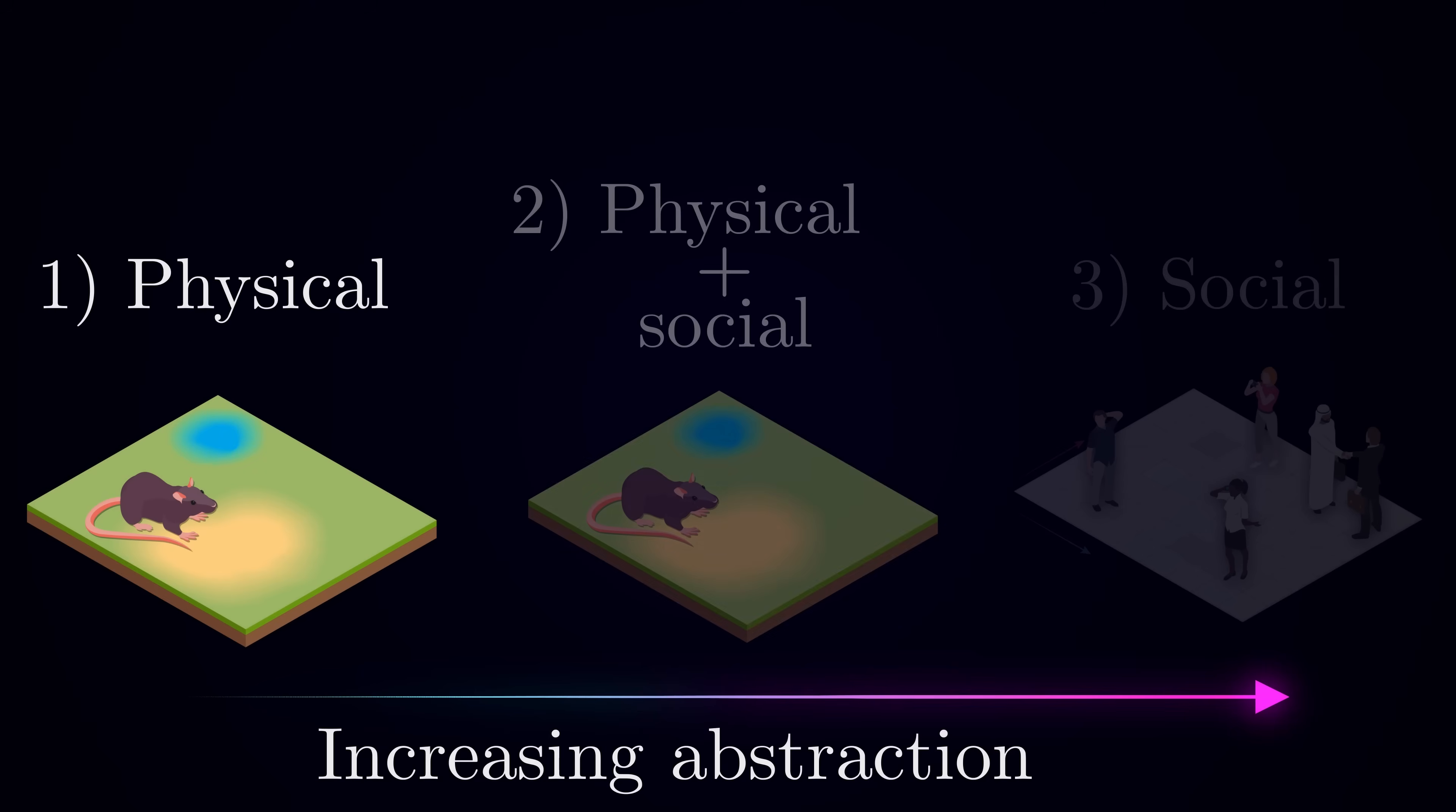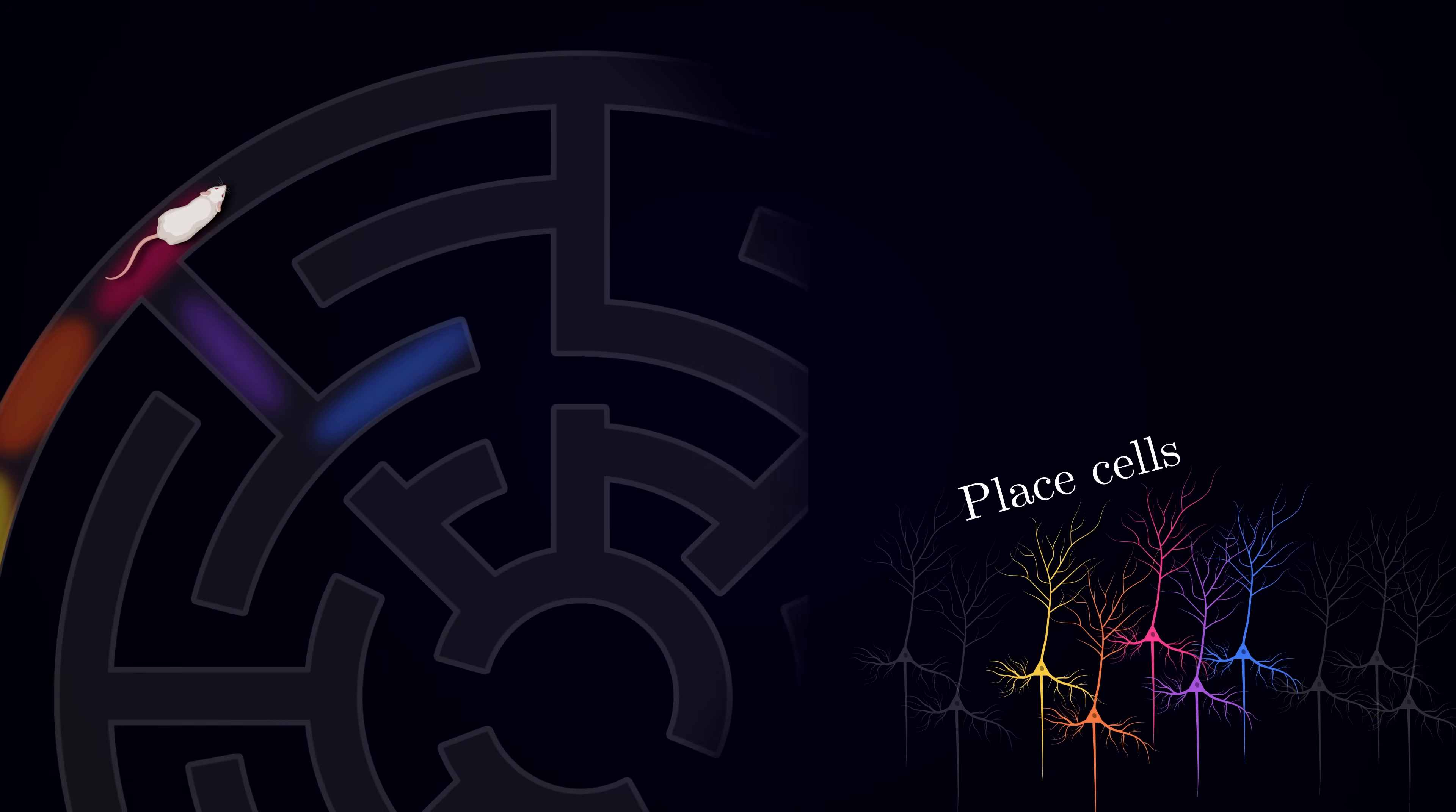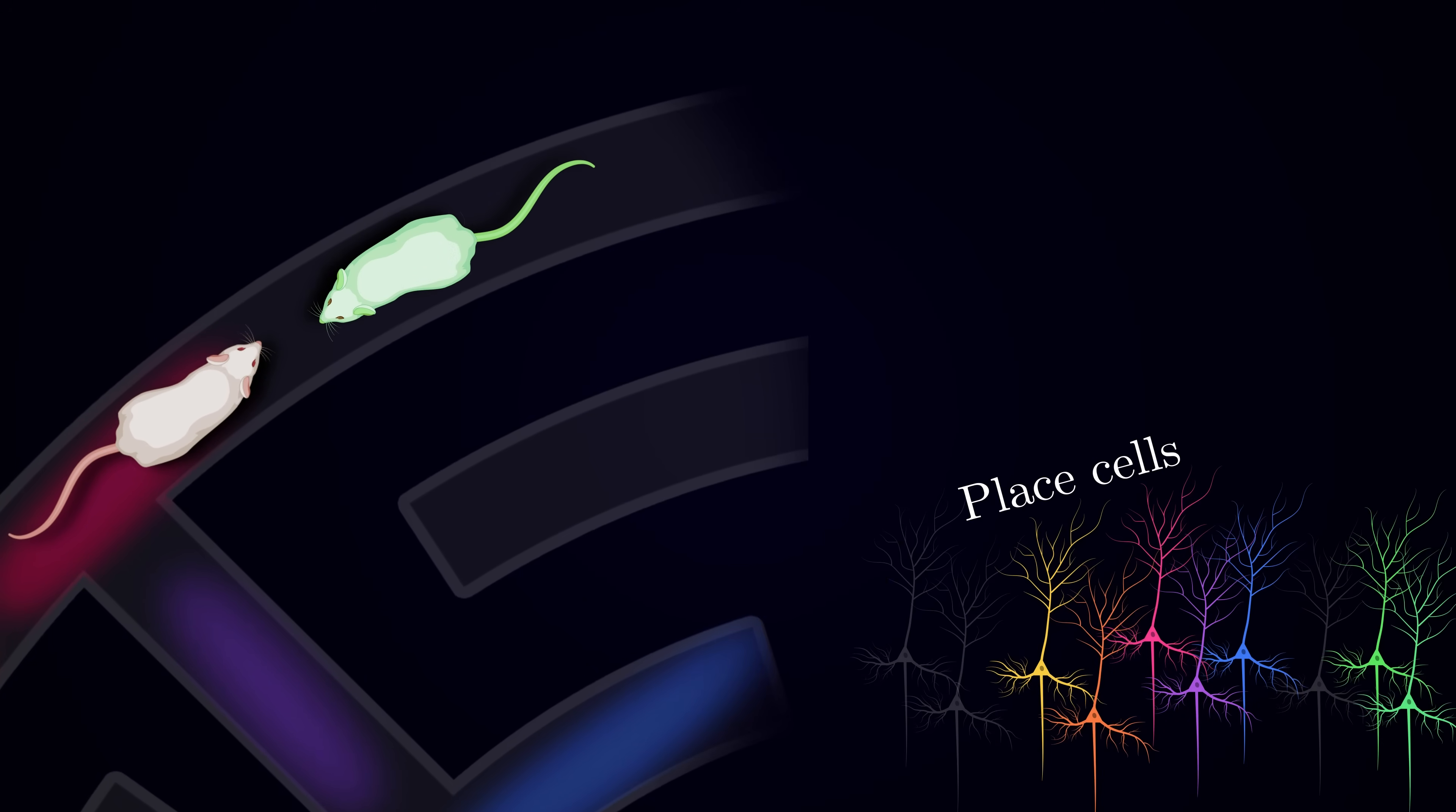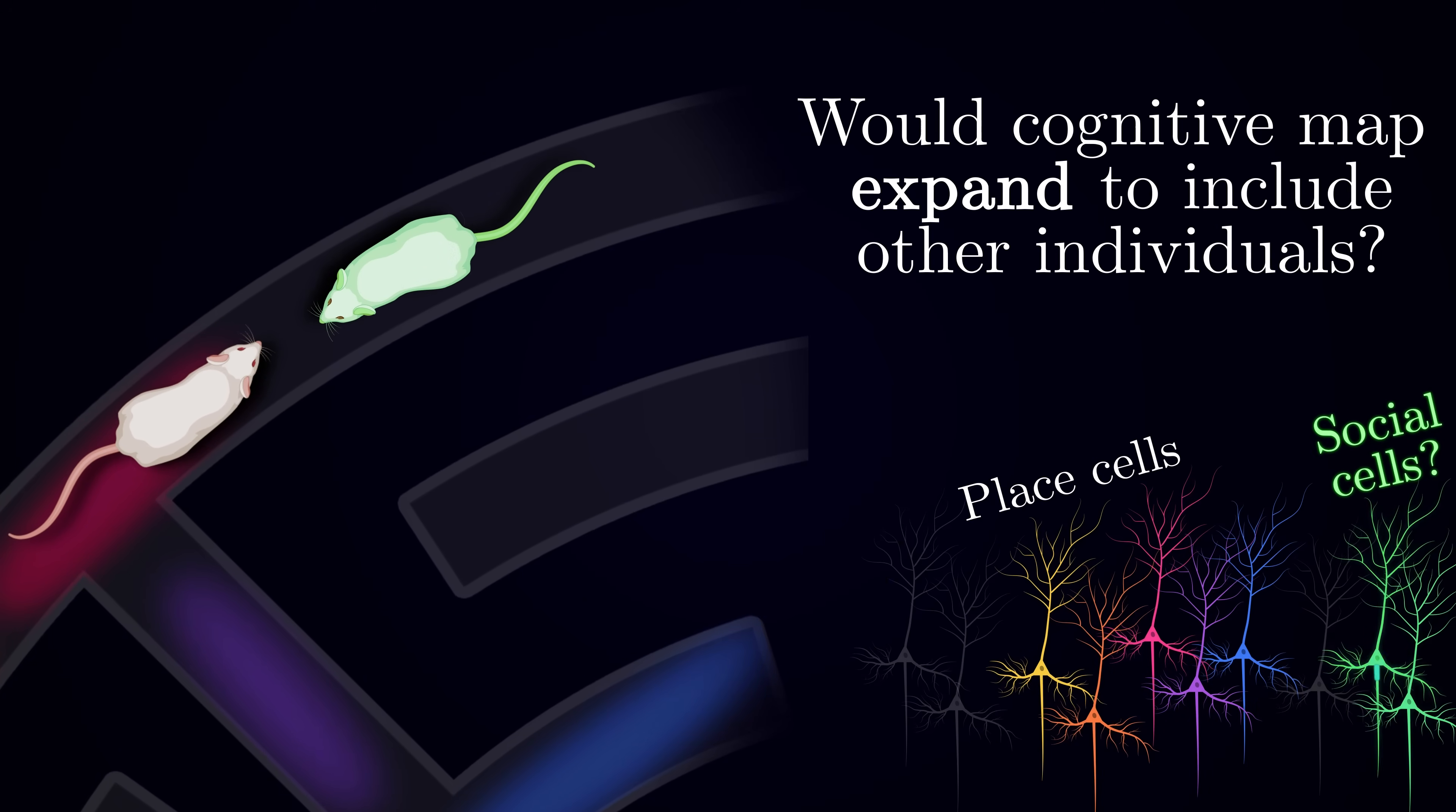However, it may seem unclear how this purely spatial representation could be adapted to represent other kinds of information. I mean, what would place fields even look like when there is no physical ground? Let's go one step further on our ladder of abstraction and see what happens to the cognitive map when we add other conspecific individuals, that is, the animals of the same species, to the environment. Can we expect the internal model of the world to expand in order to somehow include other individuals?